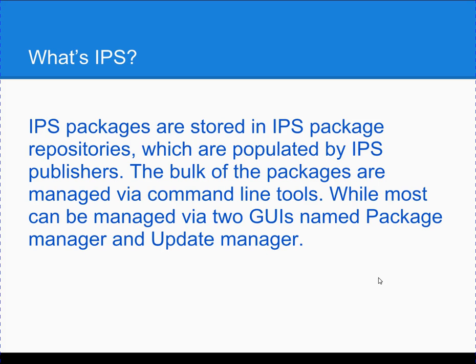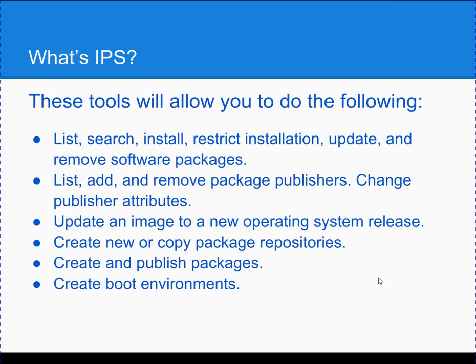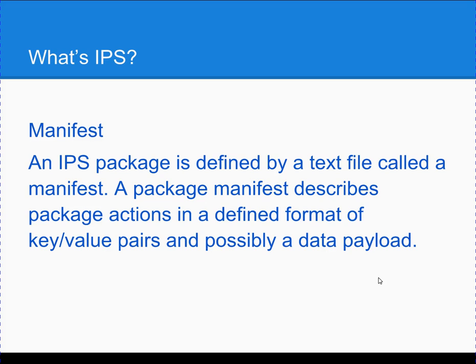These two GUIs look exactly the same in other Linux distributions as they do in Solaris 11. They allow you to list, search, install, restrict installations, add or remove package publishers, update an image to a new operating system, create or copy package repositories, create and publish packages, and create boot environments. When a publisher creates a package to be delivered in the Image Packaging System, they create what's called a manifest — a product description that tells you everything contained in that package.